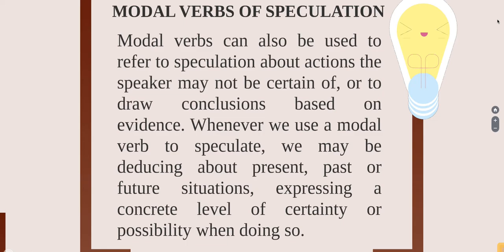As we were saying, we use modals of speculation to talk about actions that we can't be sure about. We don't have the certainty of that action. We are not sure of the things that are happening, or that are going to happen, or that happened, or the conclusions. We don't have enough evidence to prove something. In that way, we are going to use modals of speculation — in present, past, or future situations.